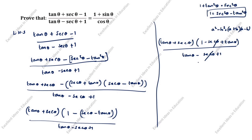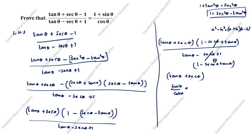This simplifies to 1 minus secant theta plus tan theta plus secant theta. So how we split this: tan theta is sin theta by cos theta, plus secant theta is 1 by cos theta, which equals sin theta plus 1 divided by cos theta.